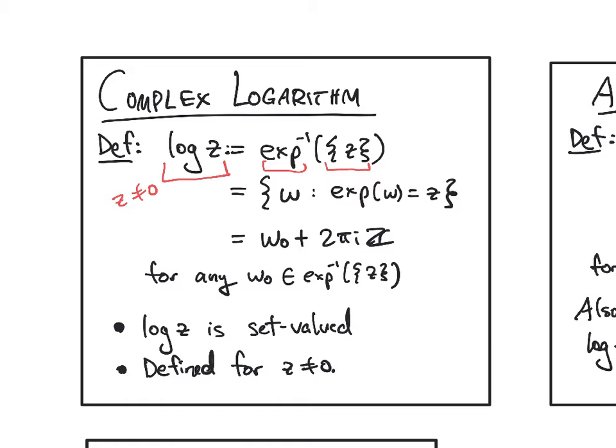So this just means all w such that exp(w) equals z. As we proved in the previous slide, if I have any pre-image w naught, then we get all pre-images by taking w naught plus multiples of 2πi by integers.